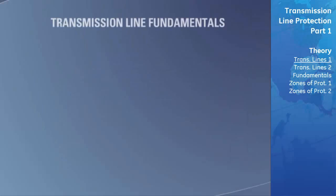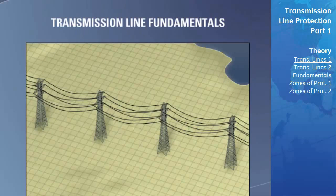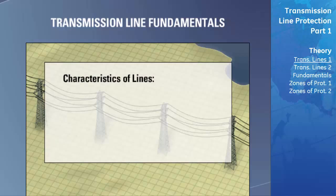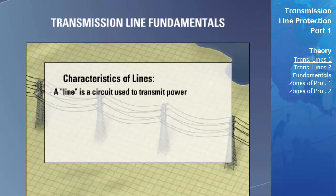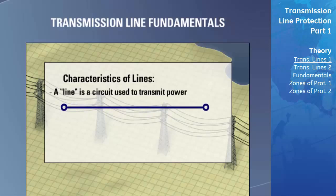We will start this section with a brief overview of transmission lines and their general operation and characteristics in a power system. A transmission line is a circuit that is used to transmit power from one location to another. These transmission lines can span short distances of a few hundred meters to very long distances in the magnitude of hundreds of kilometers.